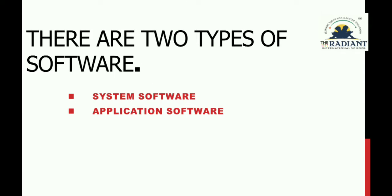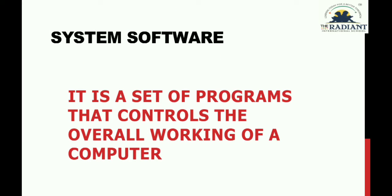There are two types of software: system software and application software. System software is a set of programs that controls the overall working of a computer. In a computer system we need both types, but system software controls the overall working of the computer — you have to remember this.